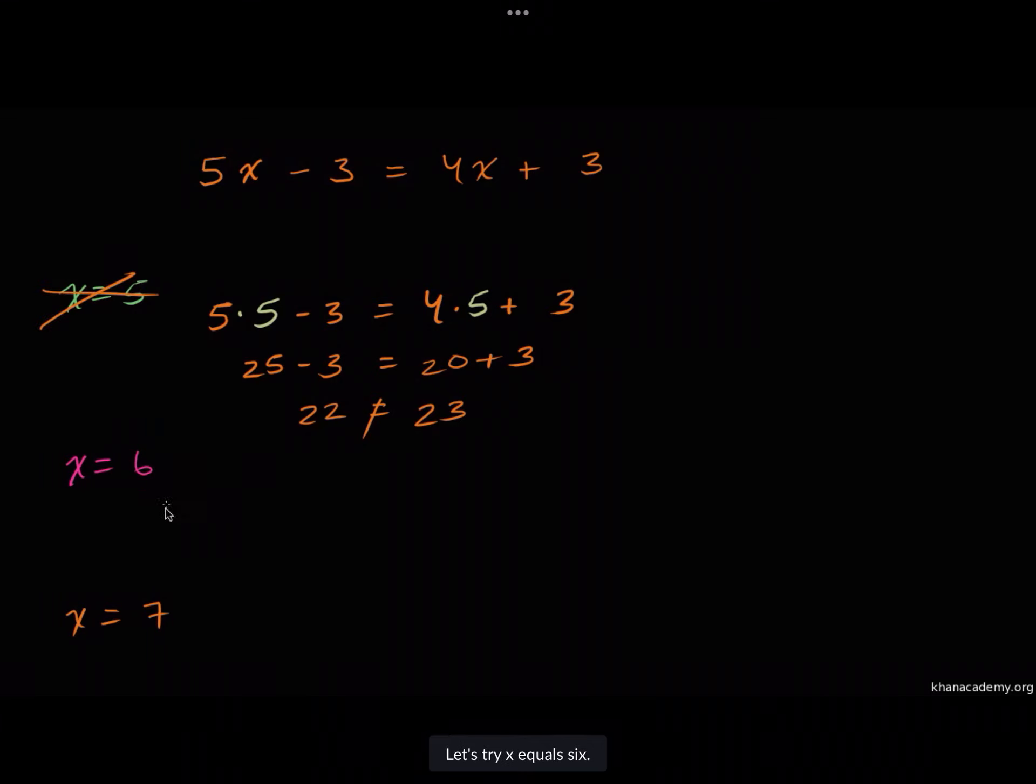Now let's try x equals six. Once again, we're going to do five times our x, which is going to be six. Actually, let me just write it out. Five times six minus three needs to be equal to four times six plus three.